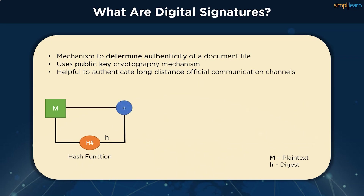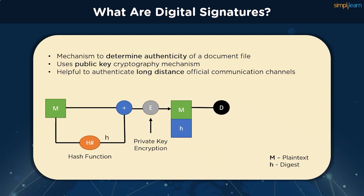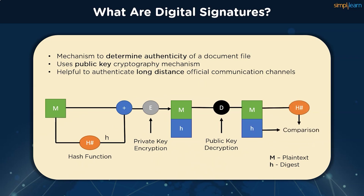Next, it bundles the message together with the hash digest and encrypts it using the sender's private key. It sends the encrypted bundle to the receiver, who can decrypt it using the sender's public key. Once the message is decrypted, it is passed through the same hash function H to generate a similar digest. It then compares the newly generated hash with the bundled hash value received along with the message. If they match, it verifies data integrity.